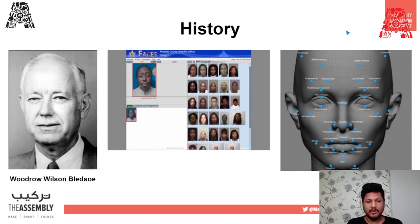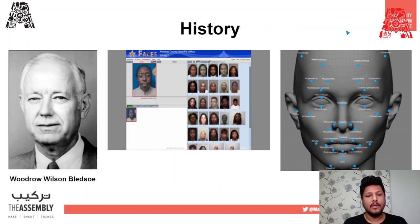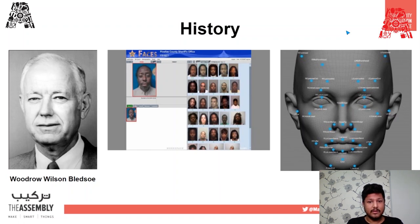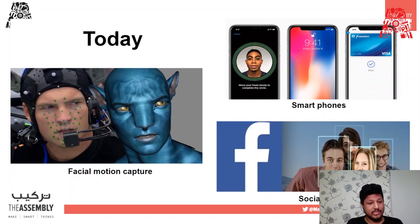A little bit of history: Woodrow Wilson Bledsoe was known as one of the founders of facial recognition technologies. He created a system that used manual algorithms or instructions based on the positions of facial features such as your eyes, ears, nose, and mouth. It's also been previously used in FBI and criminal-based systems to recognize people based on their mug shots.